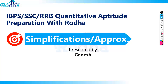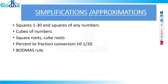Today we will discuss simplifications and approximations. As part of it, I have already covered how to find squares and cubes of any numbers in my previous video. Those who are not aware of it, please go to the playlist — I have shared many tricks there. We have discussed squares 1 to 30 and how to find the square of any number in just 3 seconds, as well as cubes of any numbers.